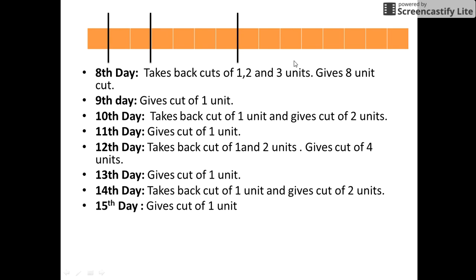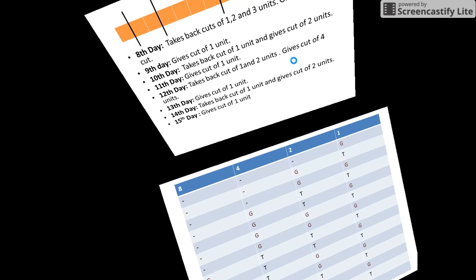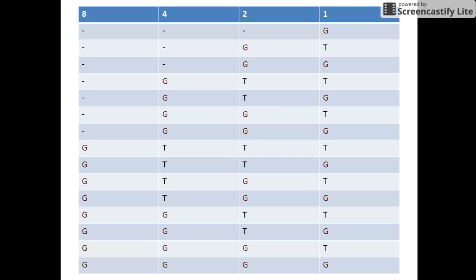Finally, on the 15th day the employee gets all the pieces of the gold rod. This table here again depicts the ways in which various gold bars are given to the employee at the end of each day. At the end of the first day he gets the one-unit cut, and so on till seven days as already discussed.